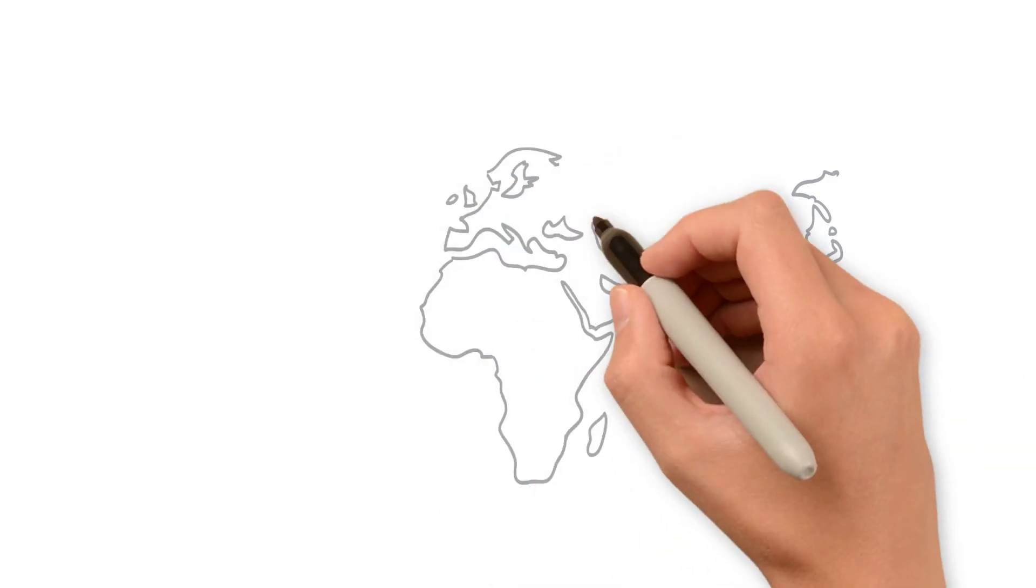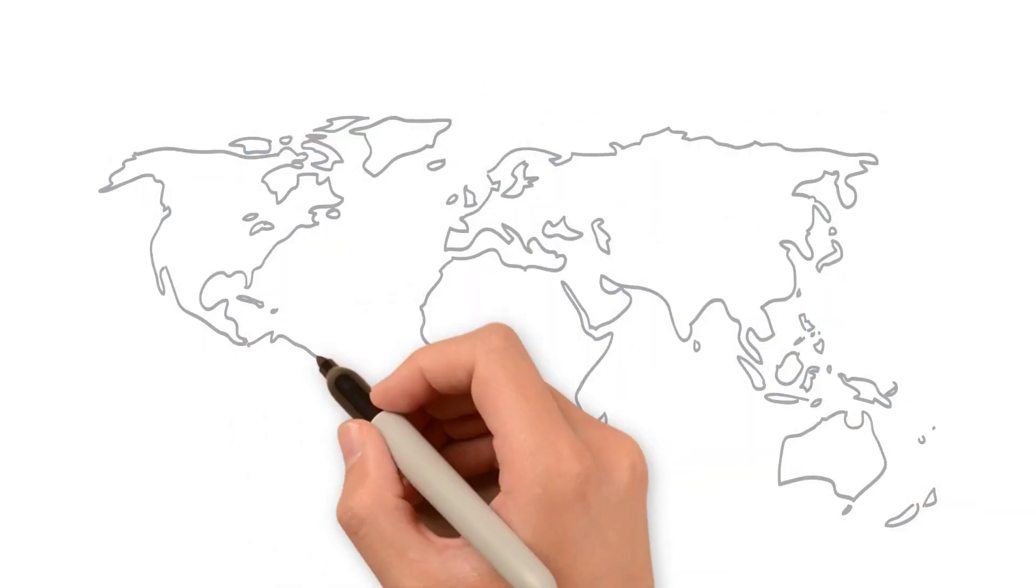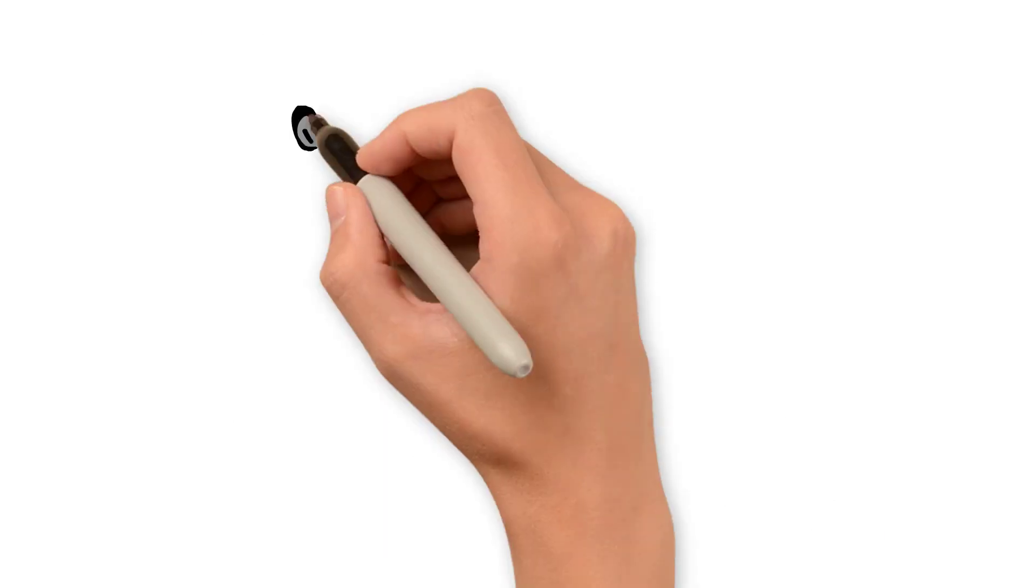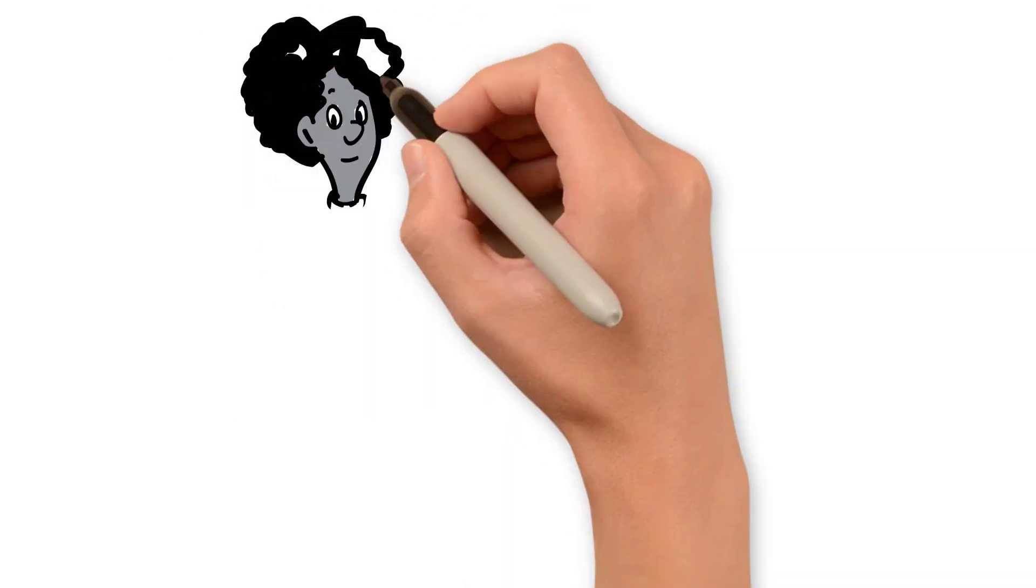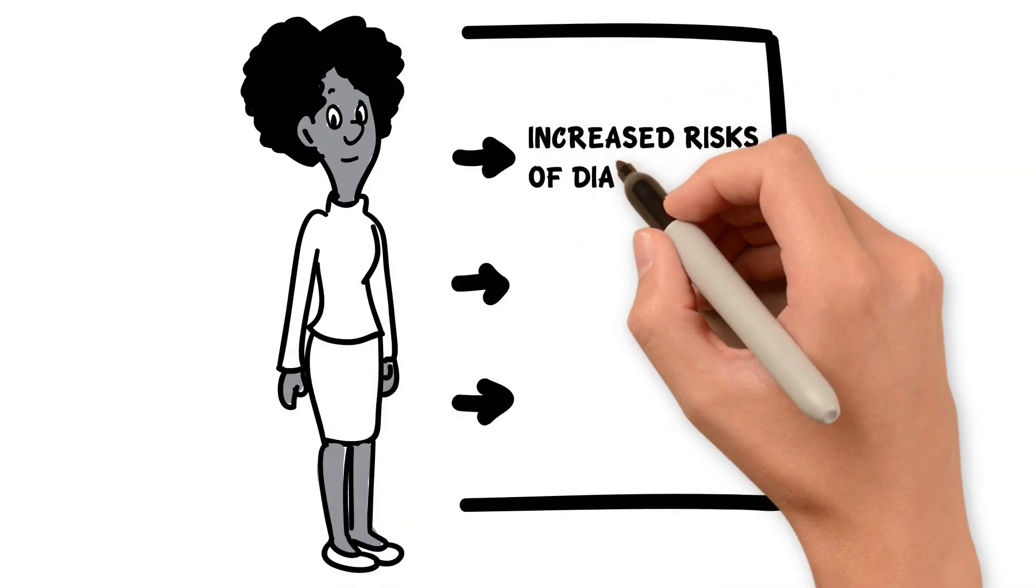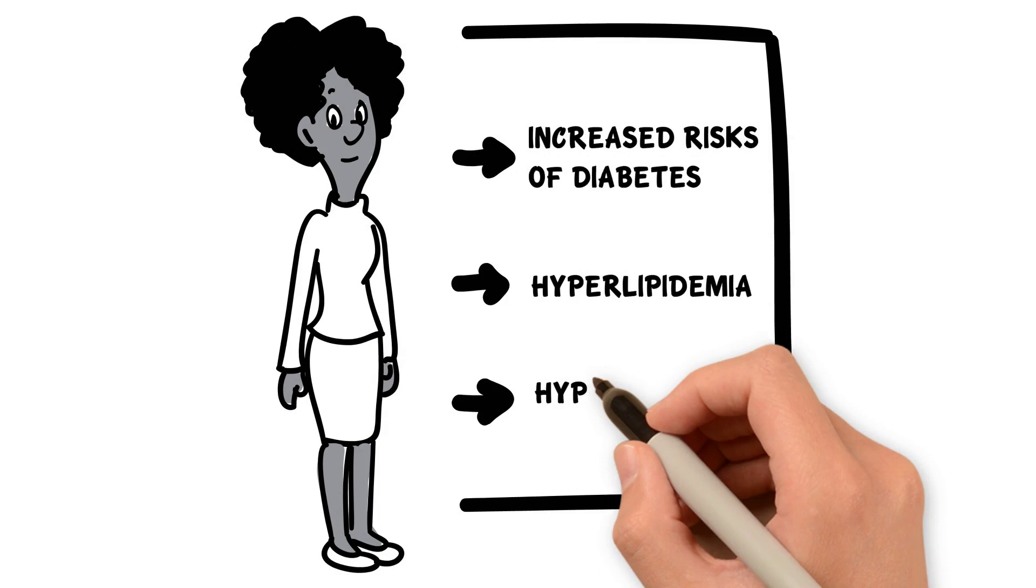For example, the incidence of hypomagnesemia among African Americans is higher, 20%, than for the rest of the population. Experts believe that low magnesium level may be one of the reasons African Americans also have increased risk of diabetes, hyperlipidemia, and hypertension.